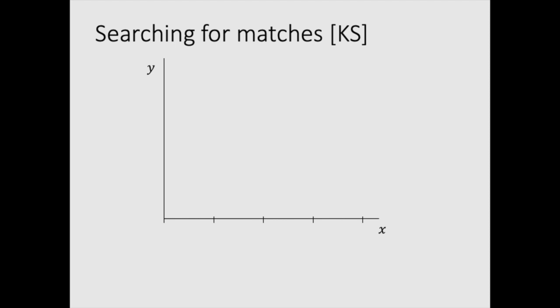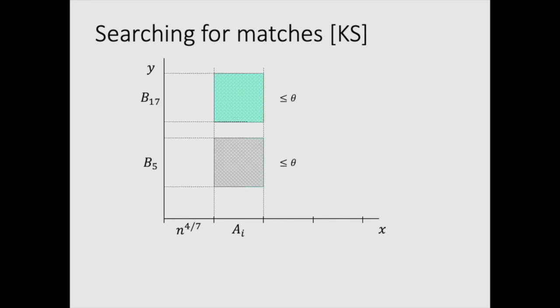So you give me a subinterval ai of x, and I want to actually find in y all subintervals which actually match it closely. So they are at the distance at most theta from it. So like this over here, b5 and b17 are actually at most distance theta.